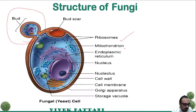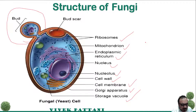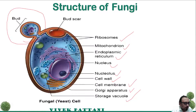The yeast cell contains ribosomes, mitochondria, endoplasmic reticulum, nucleus, cell wall, cell membrane, Golgi apparatus, and storage vacuole. The structure is more similar to that of a eukaryotic cell.